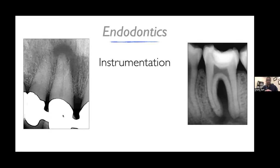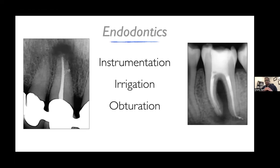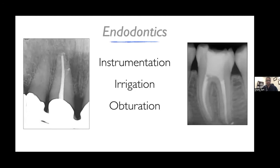In order to reach microbial control, we rely on the pillars of endodontics: instrumentation, irrigation, and obturation. If we do these steps according to a standardized protocol — a step-by-step recipe — we can reach adequate microbial control and see healing or disappearance of disease on x-rays and reestablishment of natural anatomy, as we see on these x-rays here. Even with unorthodox lesion locations like in the furcation, we can heal this disease if we execute these three steps according to a certain protocol.